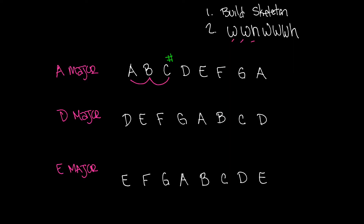D to E — is that a whole step? Yes. E to F — is that a whole step? No, so we put an F sharp. F sharp to G — is that a whole step? No, so we put a sharp on G. G sharp to A — is that a half step? Yes. So the A major scale is: A, B, C sharp, D, E, F sharp, G sharp, and A.